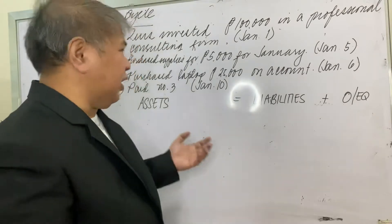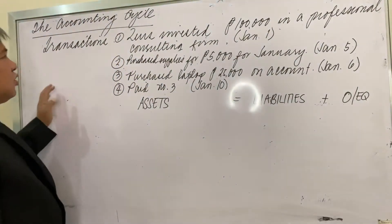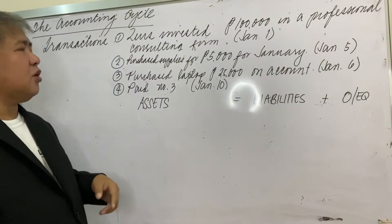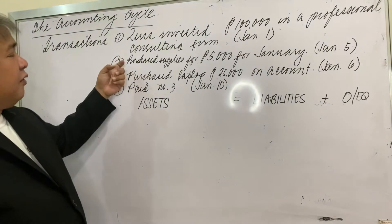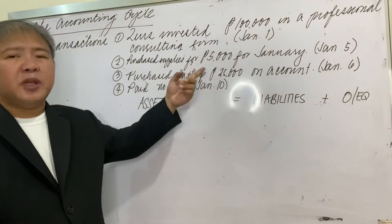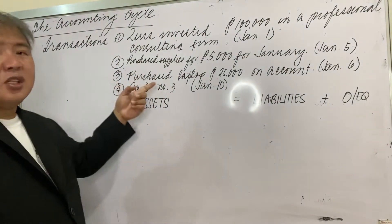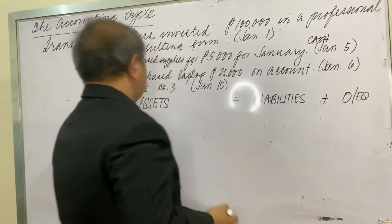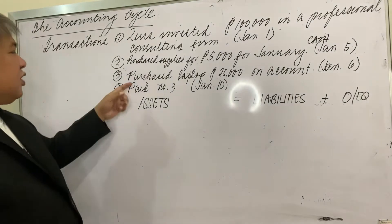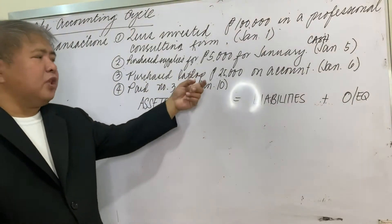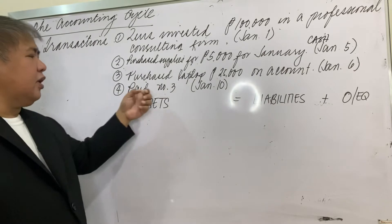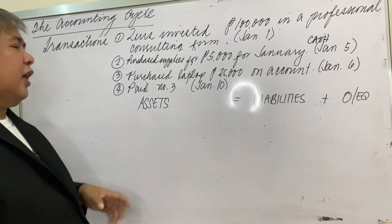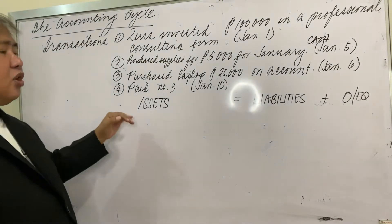We have four transactions. On January 1, Zeus invested 100,000 pesos in his professional consulting firm. On January 5, he purchased supplies for 5,000 pesos in cash. On January 6, he purchased a laptop for 25,000 pesos on account. And on January 10, he paid for that January 6 transaction.